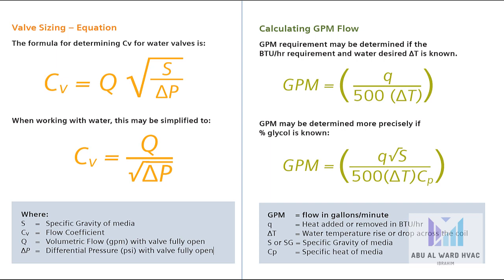For water specifically, Cv equals Q divided by the square root of ΔP, where S is the specific gravity of the media, Cv is the flow coefficient, Q is the volumetric flow rate in GPM with valve fully open, and ΔP is the differential pressure in PSI with the valve fully open.